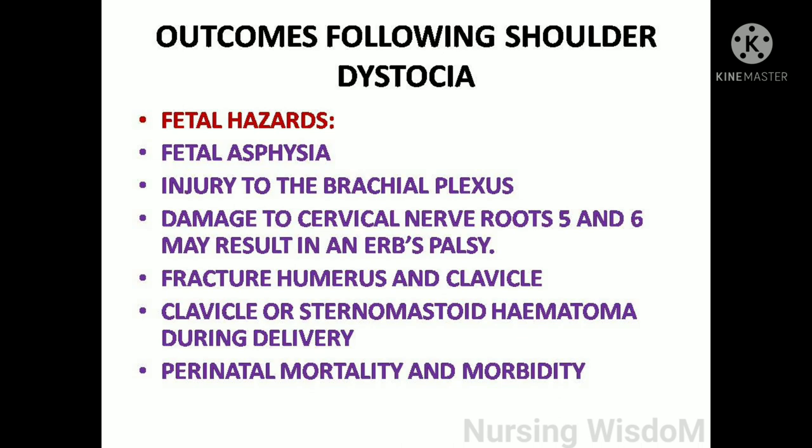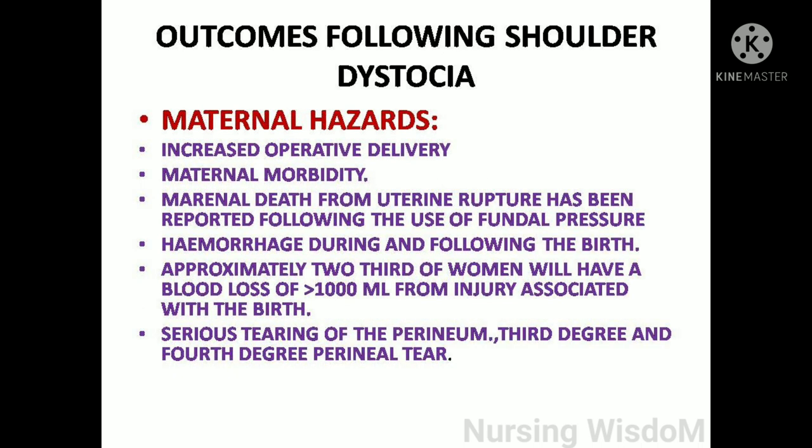Outcomes following shoulder dystocia: fetal hazards include fetal asphyxia, injury to the brachial plexus, damage to cervical nerve roots 5 and 6 causing Erb's palsy, fracture of humerus and clavicle, sternomastoid hematoma during delivery, and perinatal mortality and morbidity. Maternal hazards include increased operative delivery, maternal morbidity, maternal death from uterine rupture following fundal pressure, hemorrhage with approximately two-thirds of women having blood loss over 1000 ml, and serious perineal tearing (third and fourth degree).